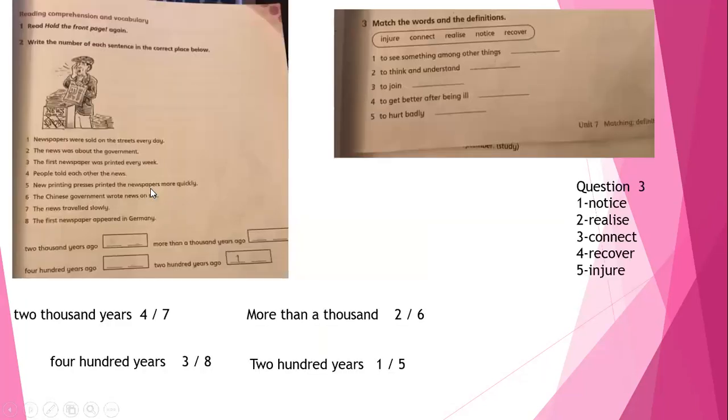Now let's move to the second question. Look here. We have eight sentences: Newspapers were sold on the street every day. The news was about the government. The first newspaper was printed every week. People told each other the news. The new printing presses printed the newspaper more quickly. The Chinese government wrote news on silk. The news traveled slowly. The first newspaper appeared in Germany.